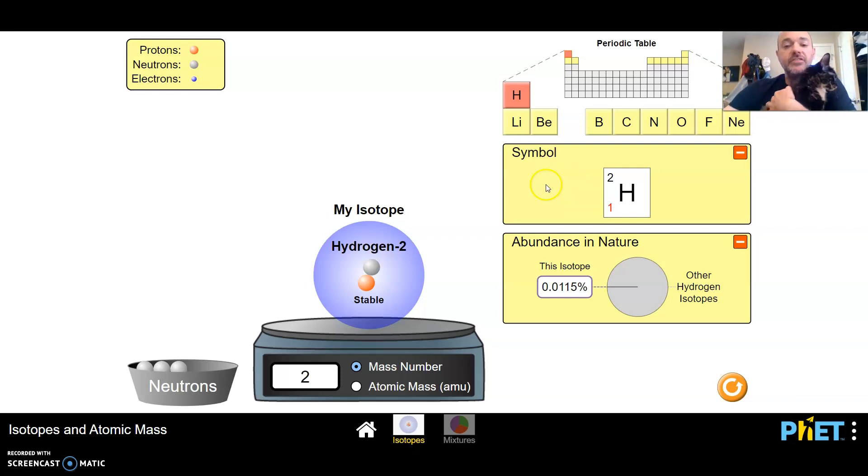So hydrogen two, you can see it's got a relatively small abundance. It's got 0.0115% of isotopes in nature of hydrogen are hydrogen two.